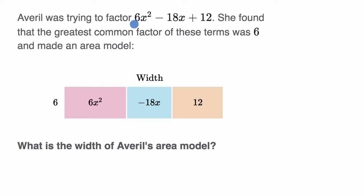Avril was trying to factor 6x² - 18x + 12. She found that the greatest common factor of these terms was 6 and made an area model. What is the width of Avril's area model? Pause this video and see if you can figure that out, and then we'll work through this together.